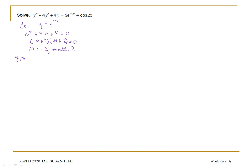One solution is e to the negative 2x, and then a second linearly independent solution is x e to the negative 2x. Our complementary solution is c1 e to the negative 2x plus c2 x e to the negative 2x.